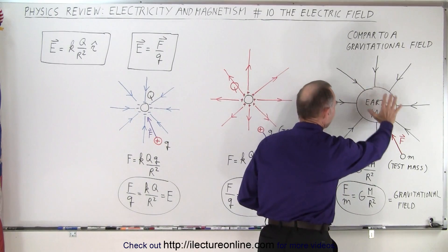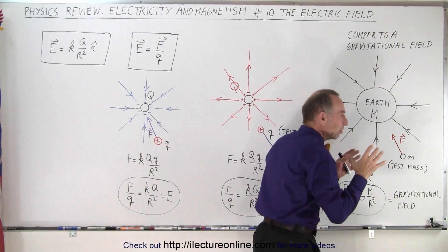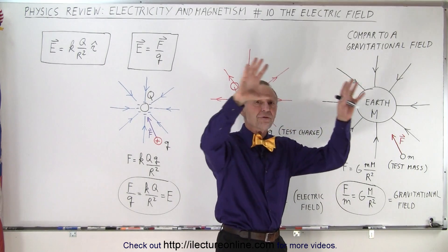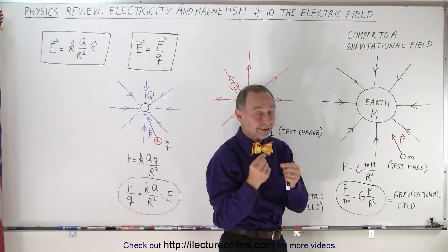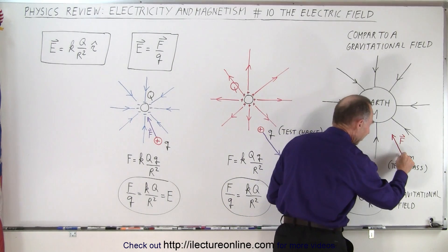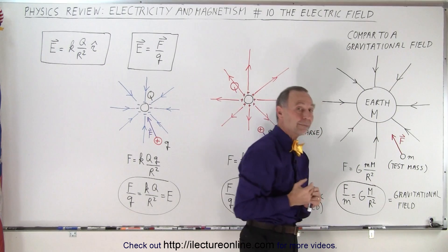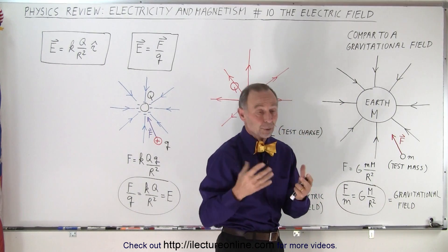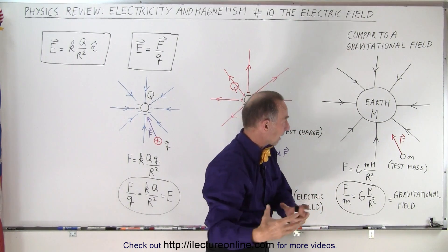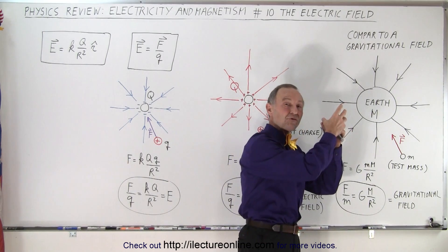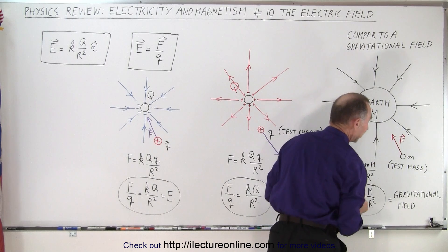Let's say we have the Earth right here. These lines here represent the gravitational field around the Earth. How do we know that it's there? We can test it by placing a small mass in space close to the Earth and then measuring the force on that mass. We know that an object placed out in space close to the Earth will feel a force of attraction due to the gravitational force towards the Earth, and so we can measure that.